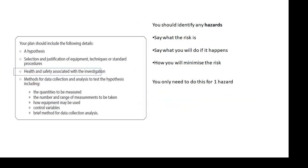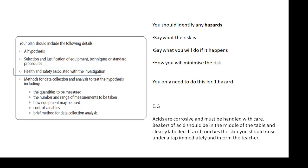You should identify any hazards. We talked about the risk analysis in the last video. Say what the risk is. Say what you'll do if it happens. Say how you'll minimize the risk. And you only need to do it for one hazard. You don't need to identify loads and loads. Just do it for one hazard. Do it for two to be careful. But you actually only need one. The most obvious one would be the best one. For example, acids are corrosive and must be handled with care. Beakers of acid should be in the middle of the table and clearly labeled. If acid touches the skin, you should rinse under a tap immediately and inform the teacher or a technician.